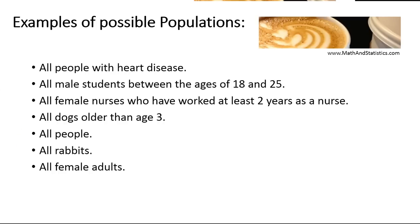Finally, another example is all female adults. There's a lot of research that deals with breast cancer, ovarian cancer, and things of this nature, so the population of interest for that type of research is all female adults. As you can see, a population always deals with every single member of that particular group of interest. It can be extremely broad, like all people, or extremely specific, like all female nurses who have worked at least two years as a nurse. As long as the population contains every single member of your group of interest, it is considered a population.